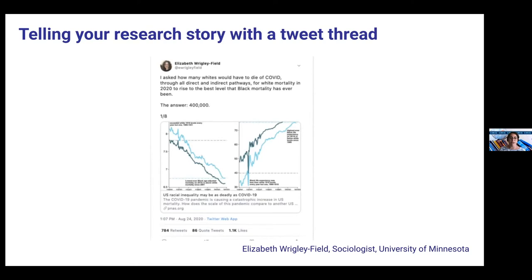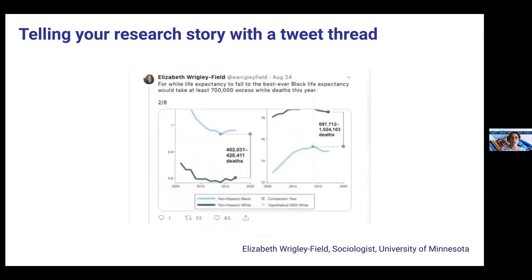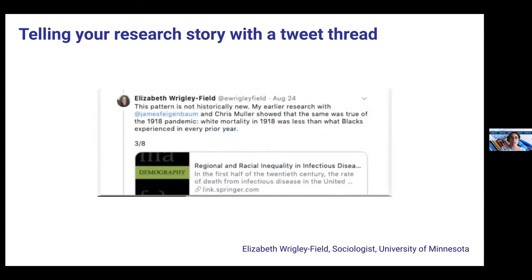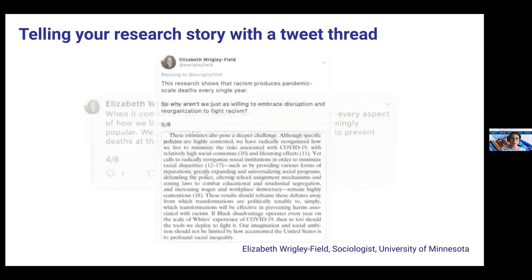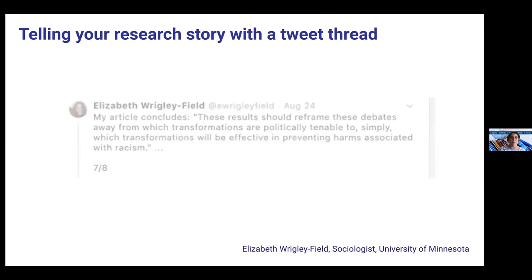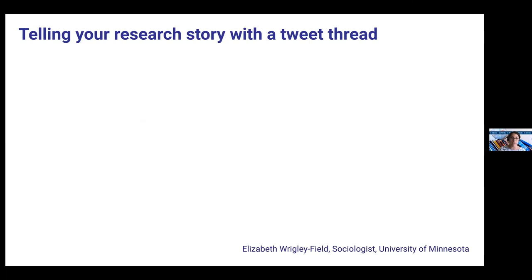Here are some examples from colleagues. Elizabeth Wrigley-Field — yes, that is her real last name — is a sociologist at the University of Minnesota. She told her research story here with a tweet thread, which is where you can add different tweets to one thread to get more than 280 characters. She does it in a way that expertly builds a story through her tweet thread, highlighting headlines and data, and building on emotions to get users to click on her research paper. She opens with: 'I asked how many whites would have to die of COVID through all direct and indirect pathways for white mortality in 2020 to rise to the best level that black mortality has ever been. The answer: 400,000.' A great opening that draws you into the research.